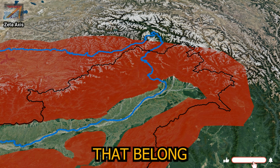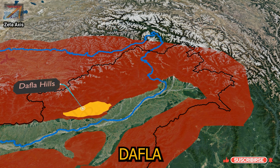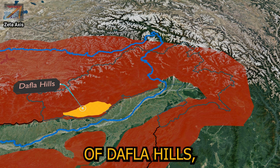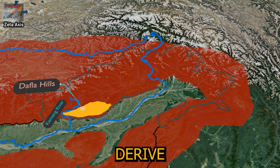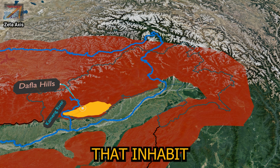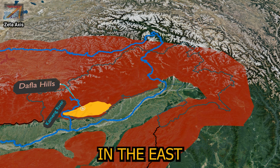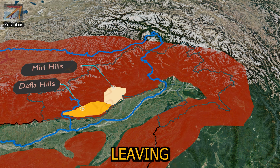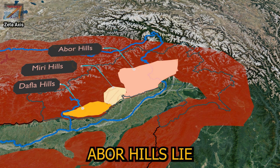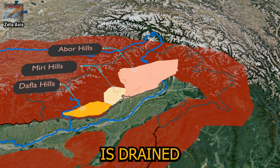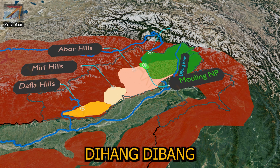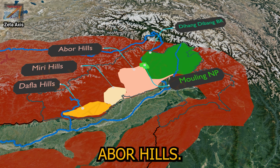Let's start with the mountains that belong to the Himalayan system. Dafla hills are located near the boundary of Arunachal Pradesh and Assam, mainly in Arunachal Pradesh. To the west of Dafla hills we have the Kameng river. These hills derive their name from the Dafla tribes that inhabit them. To the east of Dafla hills we have Miri hills, also named after the Miri tribe. Abhor hills lie east of Miri hills and are drained by the Dibang river, a tributary of the Brahmaputra. Part of Malling National Park as well as the Dihang-Dibang Biosphere Reserve is located over Abhor hills.